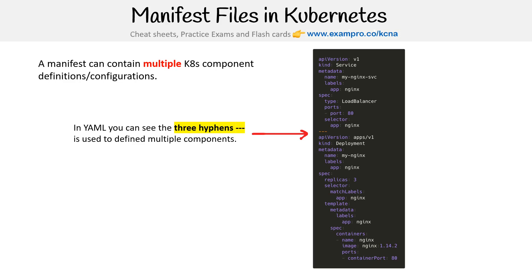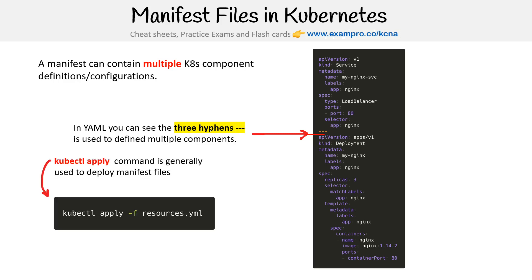In YAML, they have the syntax of three hyphens, which allows you to define basically an array — so we have two different things here. Once we have however many Kubernetes components we want to define in a manifest file, we're going to be using kubectl and writing apply. This is something we use a lot in this course — we're doing kubectl apply hyphen F, etc. — and you will absolutely know this by the end of the course inside and out.